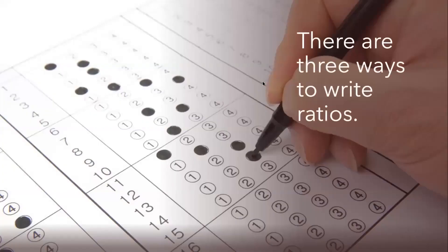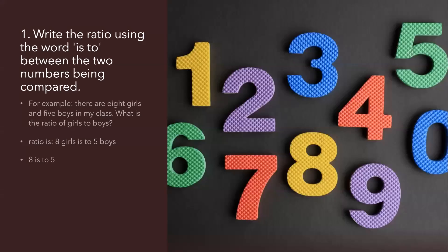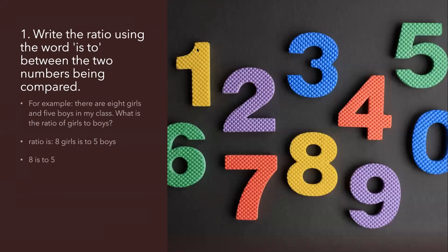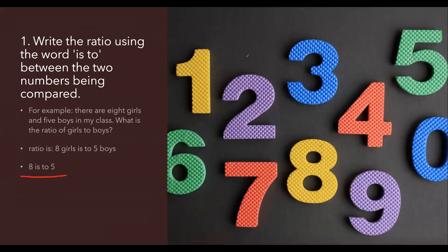The ratios are of different varieties. Here we are going to see what are the three ways in which we can write down the ratios. Number one, write the ratio with the word 'is to'. We have boys girls example here. The number has been changed to eight girls and five boys. We can write the ratio as eight is to five.